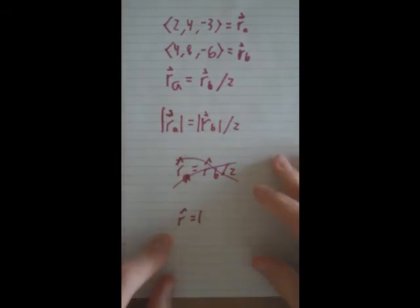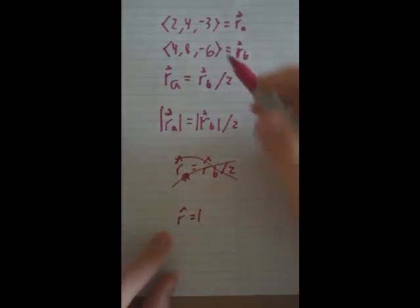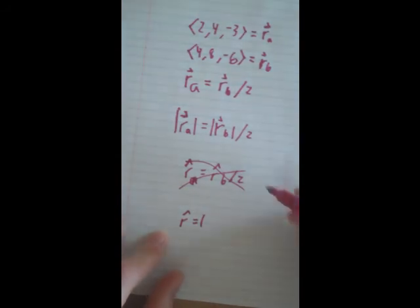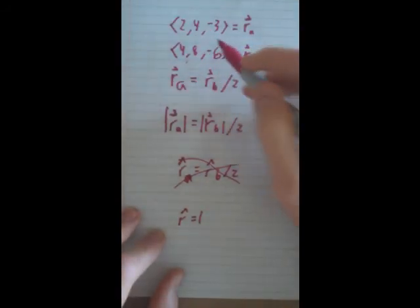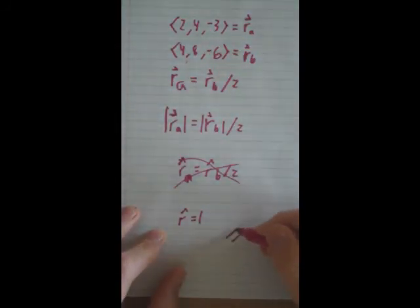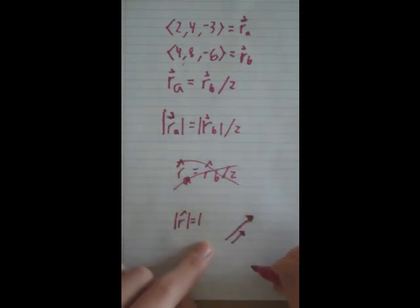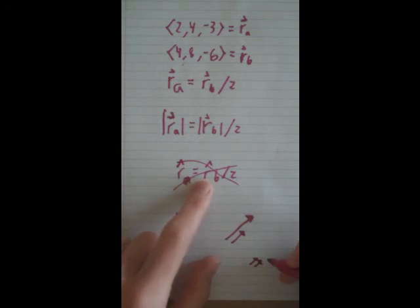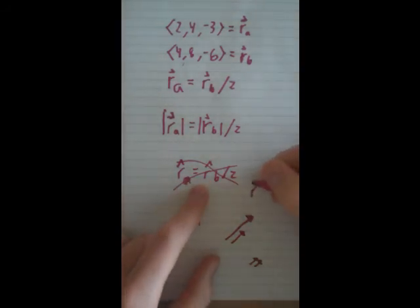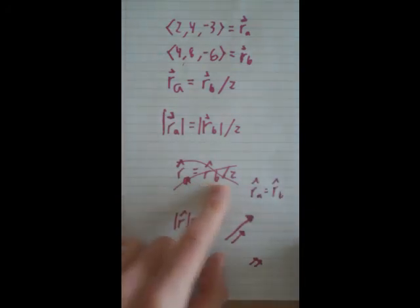Since these are pointing the same way, as you can see, even though this is twice as big, the directional derivative - the magnitude of it - is always going to be 1. So the directional derivatives will just look like this. The directional derivatives will equal each other, it won't be this over 2.